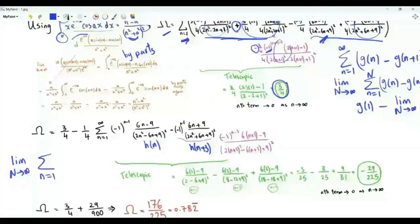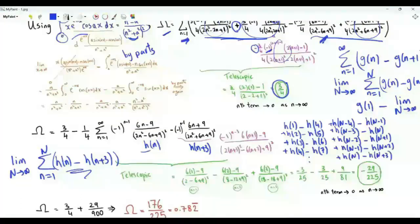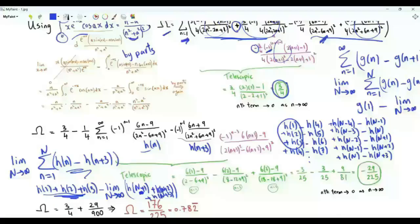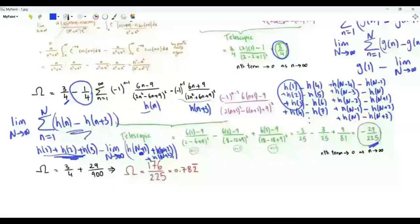Taking the limit as N→∞ of the sum of h(n) − h(n+3), the survivors are the first three terms: h(1) + h(2) + h(3). The limit of h(N+1) + h(N+2) + h(N+3) is 0 as N→∞. The sum of these three terms is −29/225. This is multiplied by −1/4 then added to 3/4, giving our integral Ω = 176/225.